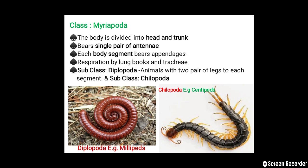The next class, Myriapoda: the body is divided into two parts — head and trunk. It bears a single pair of antennae; each body segment bears appendages. Respiration by book lungs and trachea. Myriapoda is divided into two subclasses: Diplopoda (example millipedes) and Chilopoda (example centipedes).